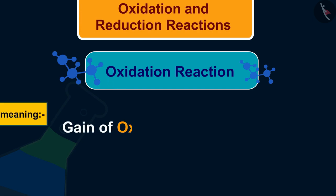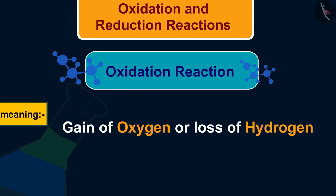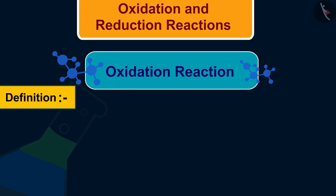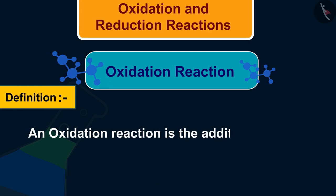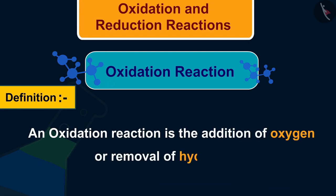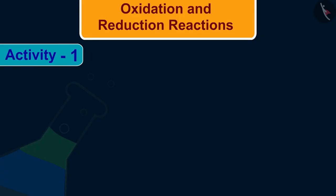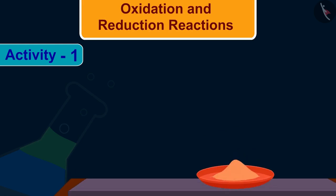The word oxidation tells us that it means gain of oxygen or loss of hydrogen. So how do we define oxidation reactions? An oxidation reaction is the addition of oxygen or removal of hydrogen. Let's understand this with the help of an activity.